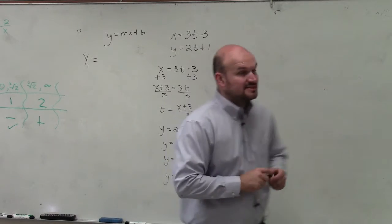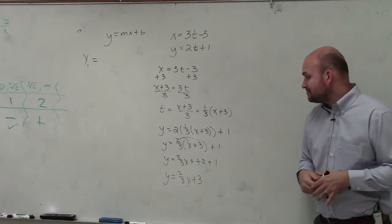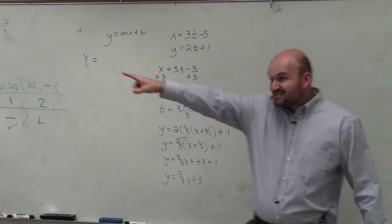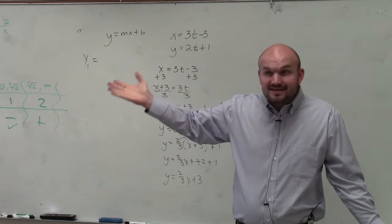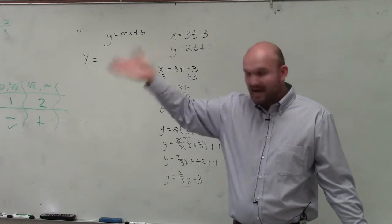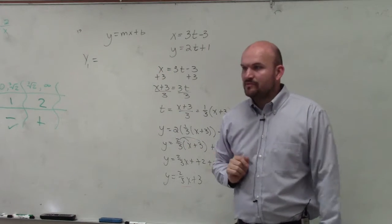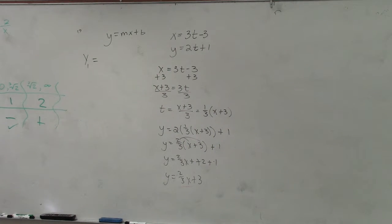So our answer is y equals 2 thirds x plus 3. Does that look like kind of what we did in x and y's? Yes, it does. Right? Positive slope, y intercepts around 3. That is what we call eliminating the parameter. So what we did is we eliminated that third variable, t.